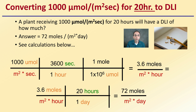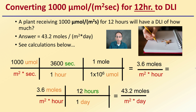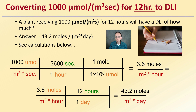In another example: running that same 1,000 micromoles per meter squared per second but now for only a 12-hour flowering cycle, the answer is 43.2 moles per meter squared per day. We're still producing the same 3.6 moles per meter squared per hour — the output per hour is identical. The difference is we're only running for 12 hours, so 3.6 moles per meter squared per hour multiplied by 12 hours gives us 43.2 moles per meter squared per day.